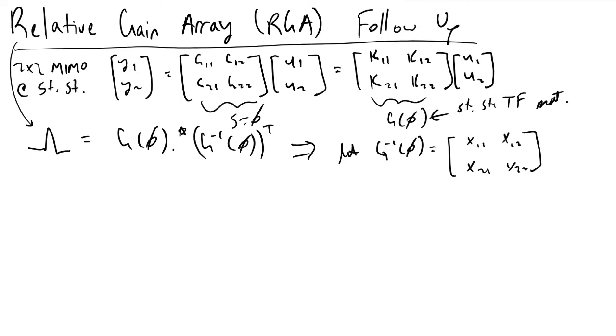If we take the transpose of G inverse 0, so transpose will be equivalent to switching elements i and j in this transfer function. So this will be equivalent to x11, because we're swapping one and one, x21, x12, x22.